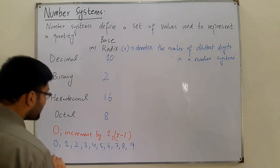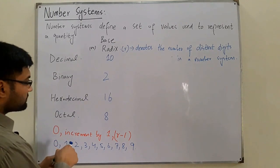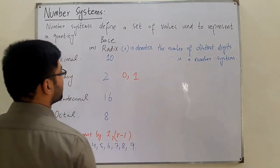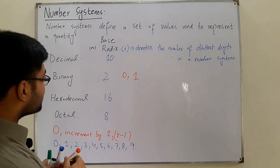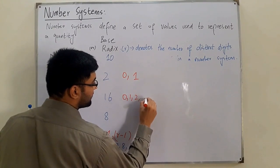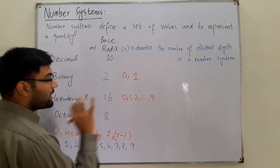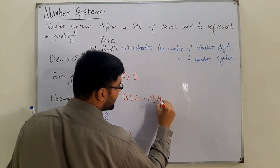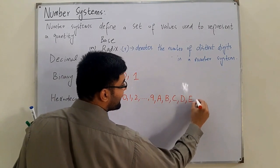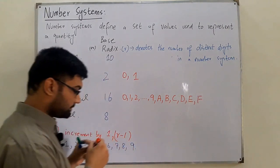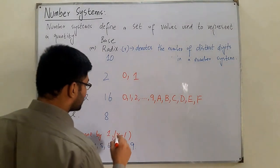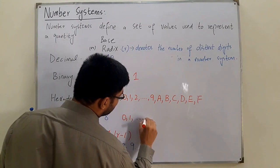For binary we have 0 and 1 — those two digits. For hexadecimal, 16 minus 1 is 15, so we go up to 15. We go up to 9 as normal, then 10 is represented by A, 11 by B, 12 by C, 13 by D, 14 by E, and 15 is represented by F. For octal, 8 minus 1 is 7, so we go from 0 to 7.